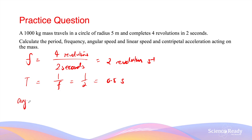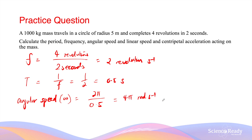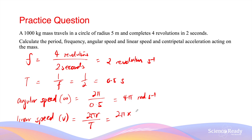The angular speed ω is given by 2π divided by the period: 2π divided by 0.5, giving 4π radians per second. The linear speed v is given by 2πr divided by the period: 2π times the radius of 5 metres, divided by 0.5, giving 20π metres per second.